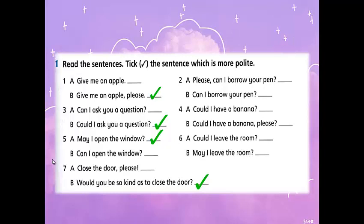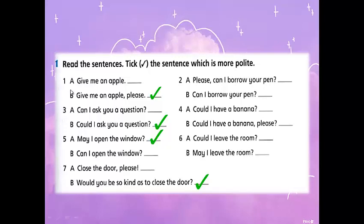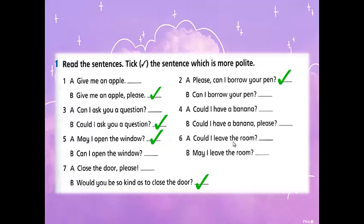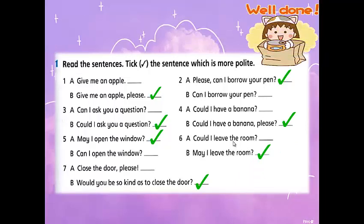The expression 'would you be so kind' is for very, very formal situations. Number two: (a) 'Please, can I borrow your pen?' or (b) 'Can I borrow your pen?' — yes, (a). Number four: (a) 'Could I have a banana?' or (b) 'Could I have a banana please?' — excellent, (b). Number six: (a) 'Could I leave the room?' or (b) 'May I leave the room?' — excellent, 'may' is more formal. Well done!